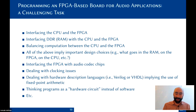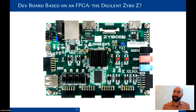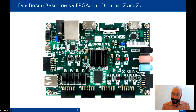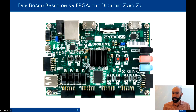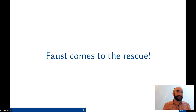An example FPGA board we've been using is a development board from Digilent based on the Zynq Z7 from Xilinx. The FPGA is in the middle; it also integrates the CPU — basically like a Raspberry Pi with an FPGA on it. You can run Linux on the CPU. These cost about $200 and are mid-range FPGAs.